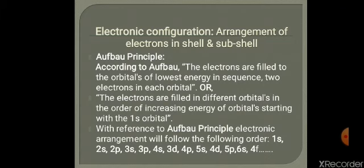So now, what is electronic configuration? It is simply the arrangement of electrons in shells and sub-shells. Electronic configuration is based on the Aufbau principle. According to the Aufbau principle, electrons are filled into orbitals of lowest energy in sequence, with two electrons in each orbital.